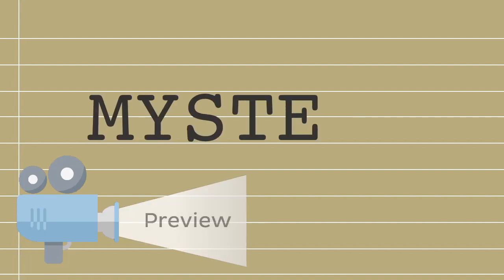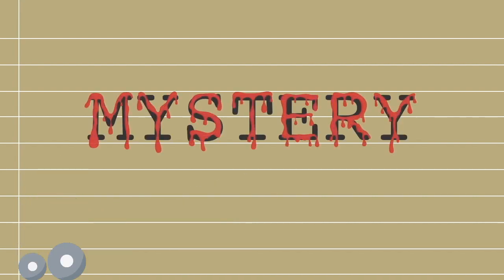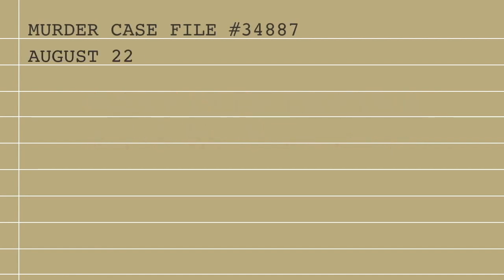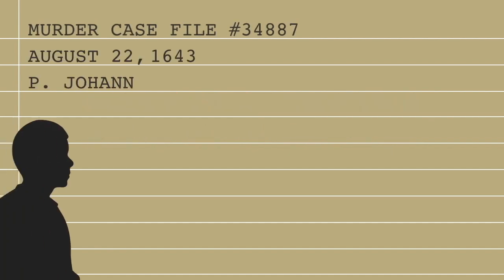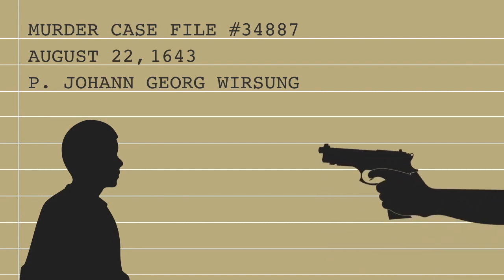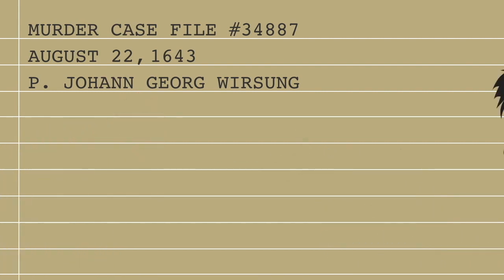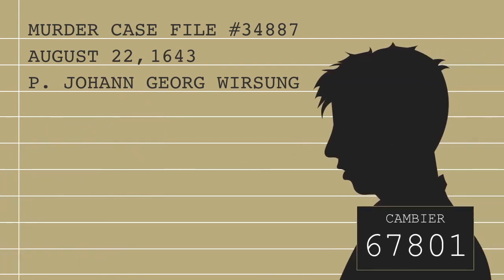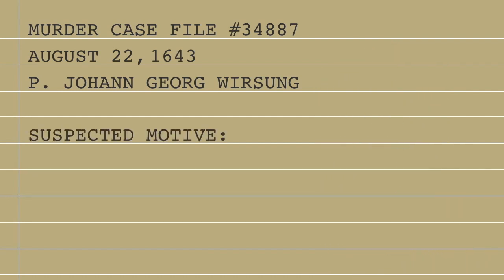Today we're in the middle of a mystery — a murder mystery. On August 22nd, 1643, Professor Johann Georg Wiersung was shot to death by a Belgian student named Jacques Gambier. Without any obvious motive for the murder, it was speculated in anatomical circles that Wiersung was murdered out of jealousy for his discovery. But what discovery might it have been?